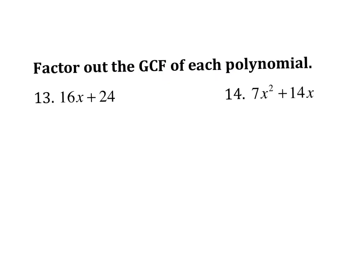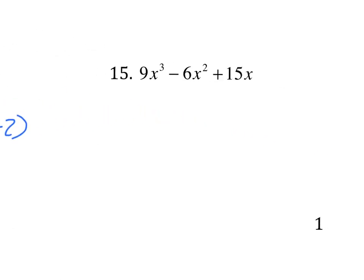And our next part here, on number 13, we are asked to factor out the GCF of each polynomial. So we're going to rewrite this. So when I look at this first term here, 16x and the 24, I notice that I can factor out an 8. And when I do that, 16 divided by 8 is 2, and x stays there. 24 divided by 8 is 3, and that stays there. On number 14, again, 7 and 14, I can pull out a 7. And then the x squared and the x, I can pull out an x. Now when I divide, I get x plus 2 remaining inside. And the same thing will apply to number 15.